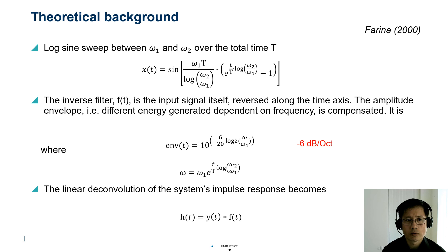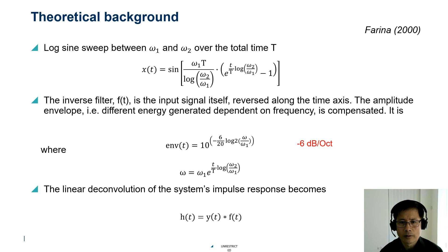Here I'd like to give a short introduction to the linear decomposition technique. A log sine sweep can be defined in this equation between the frequency omega-1 and omega-2 over a period of time T. If it is a linear sweep, the inverse filter is simply the signal itself reversed along the time axis. However, since it's a logarithmic sweep, we need to calculate the envelope as shown in this equation, and this envelope has to be compensated for. Once this compensation is done, we can get the inverse filter f(t), and the system impulse response function can be calculated by convolving the output signal y(t) with the inverse filter f(t).